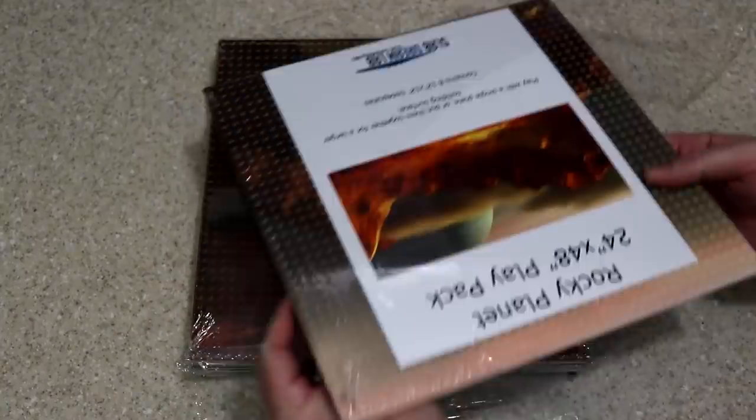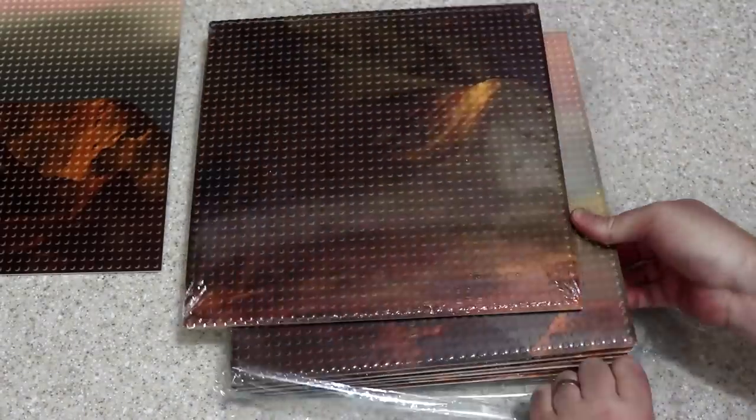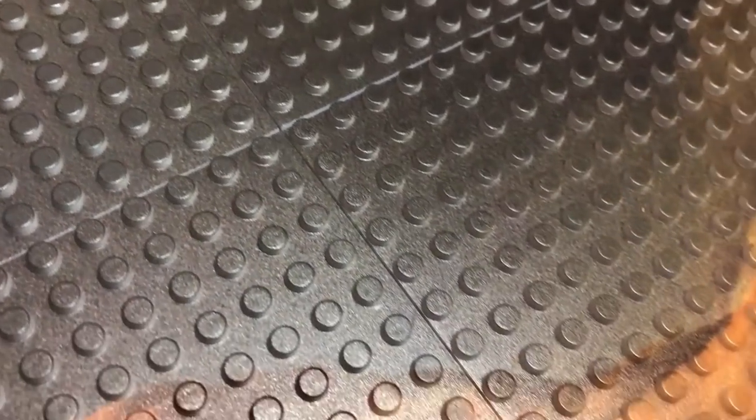These base plates have a wonderful space-themed Rocky Planet print on them and they all fit together seamlessly to create one large image that is 24 by 48 inches or 76 by 152 studs. The corners and edges are virtually seamless and the prints on these base plates line up perfectly. The quality of the printing on these base plates seems really good.